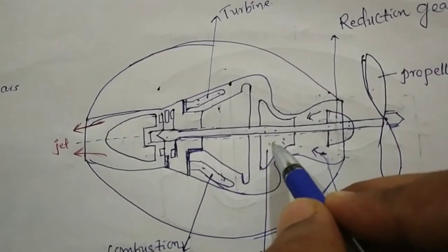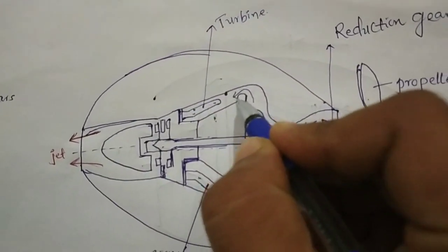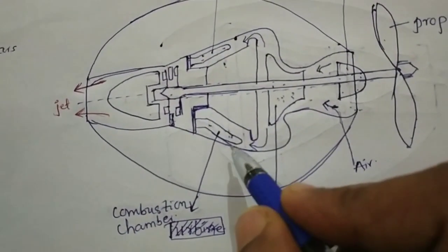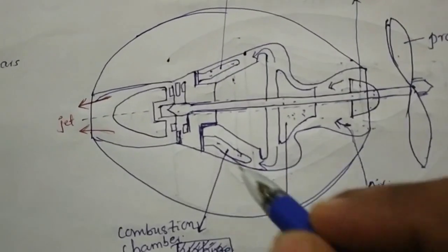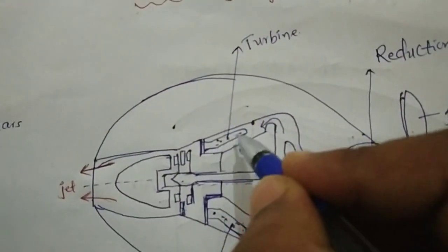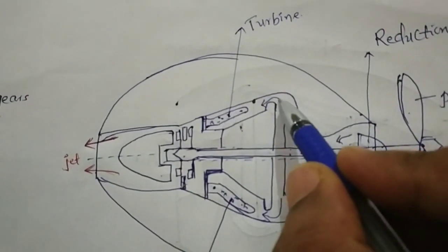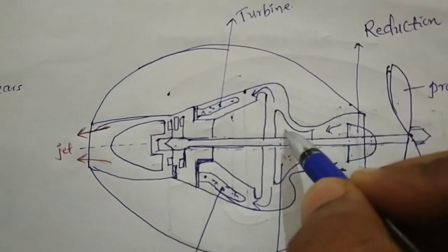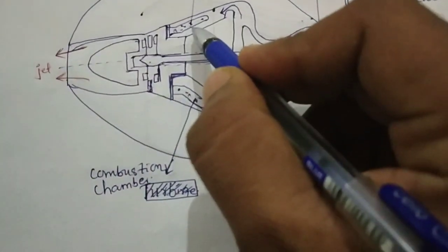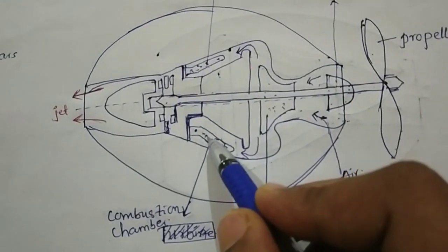After compression, the compressed air enters the combustion chamber. The compressed air from the compressor enters the combustion chamber.